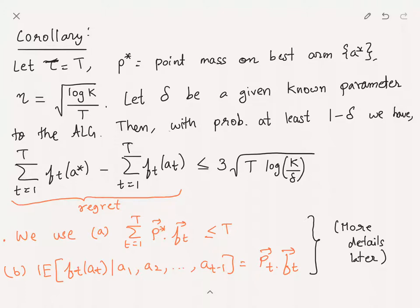Let's assume delta is some known failure probability given to the algorithm. Then what we have is the following: with probability at least 1 - delta, the total expected or total realized reward if you place a* throughout minus the total realized reward obtained by the algorithm is at most 3 * sqrt(T * log(k/delta)). So the total regret is upper bounded by order of sqrt(T) times log(k/delta).